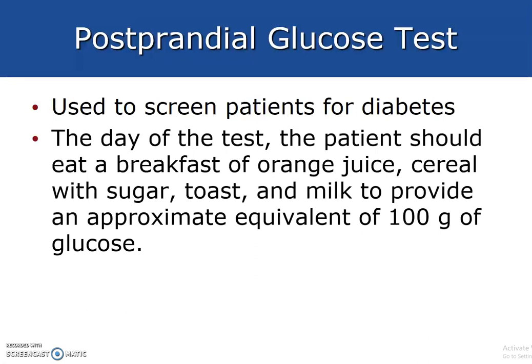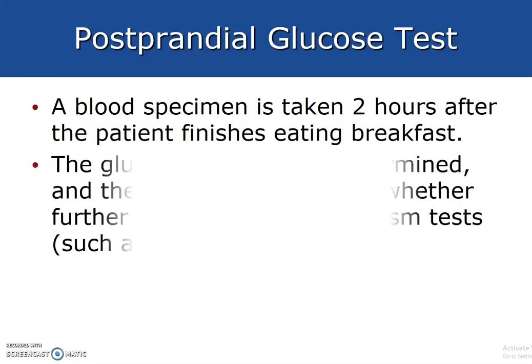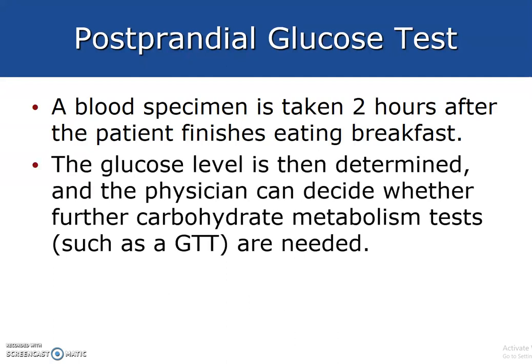The postprandial glucose test — performed after a meal — is used to screen patients for diabetes. The day of the test, the patient should eat a breakfast of orange juice, cereal with sugar, toast, and milk to provide approximately 100 grams of glucose load. The patient's blood sample is then taken two hours after the patient finishes eating breakfast. The glucose level is determined, and the physician can decide if further carbohydrate metabolism tests such as the GTT are needed.